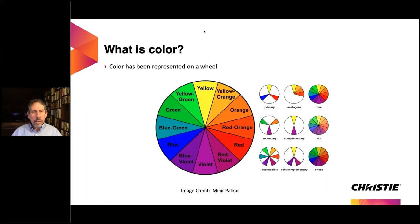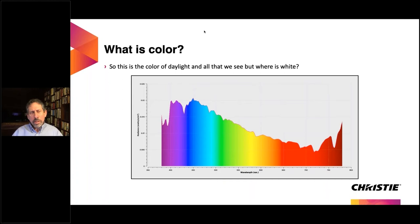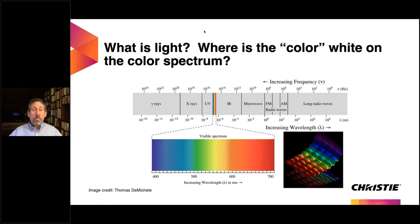Color has been represented on a wheel — primary colors, secondary, intermediate, tertiary, complementary — but the reality is when you look at color, it's not actually that way. I took a photospectrometer outdoors and captured sunlight reflected off a white piece of paper. It reads only visible light — not infrared, not ultraviolet — and it shows the full spectrum. But you'll notice there is no white in that spectrum.